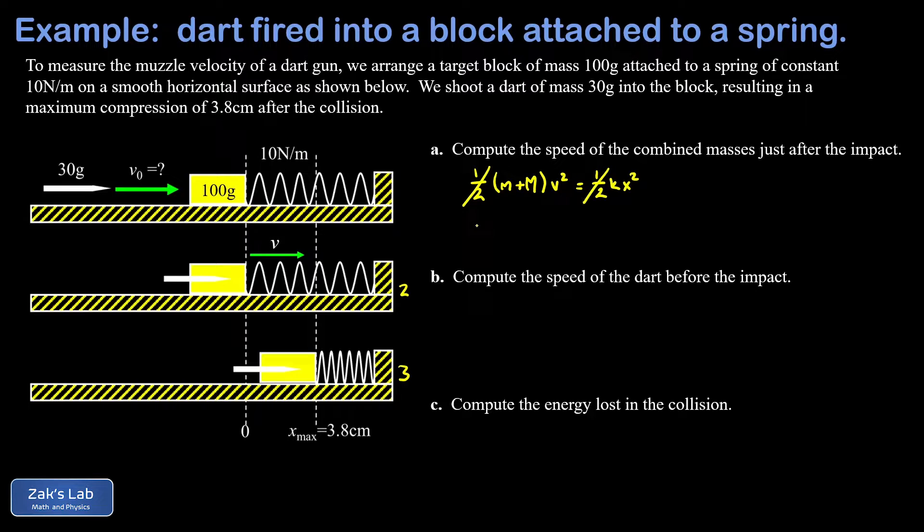That's all converted into the spring potential energy at the maximum compression. So that's one half K X squared. The one halves cancel here. I can divide by m plus M on both sides and square root the result to solve for the velocity. So I find that V is the square root of K X squared divided by the sum of the two masses, little m plus big M.